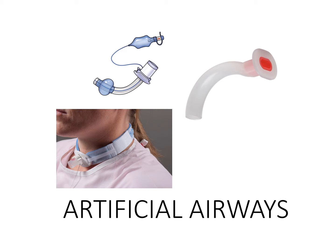Artificial airways are devices inserted when the patient's airway is at risk for obstruction or has become obstructed. The goal is to maintain airway patency and oxygenation. Devices used for this purpose are oropharyngeal and nasopharyngeal airways, endotracheal airways, and tracheostomies. Endotracheal airways will not be focused on in this presentation.